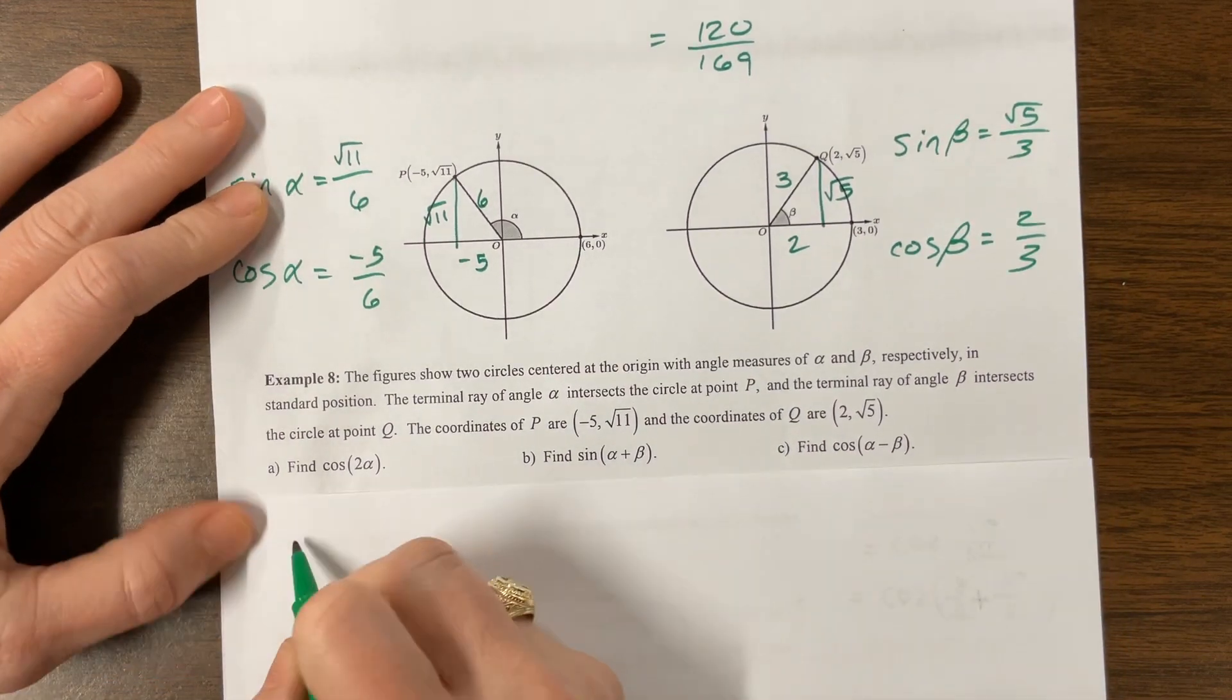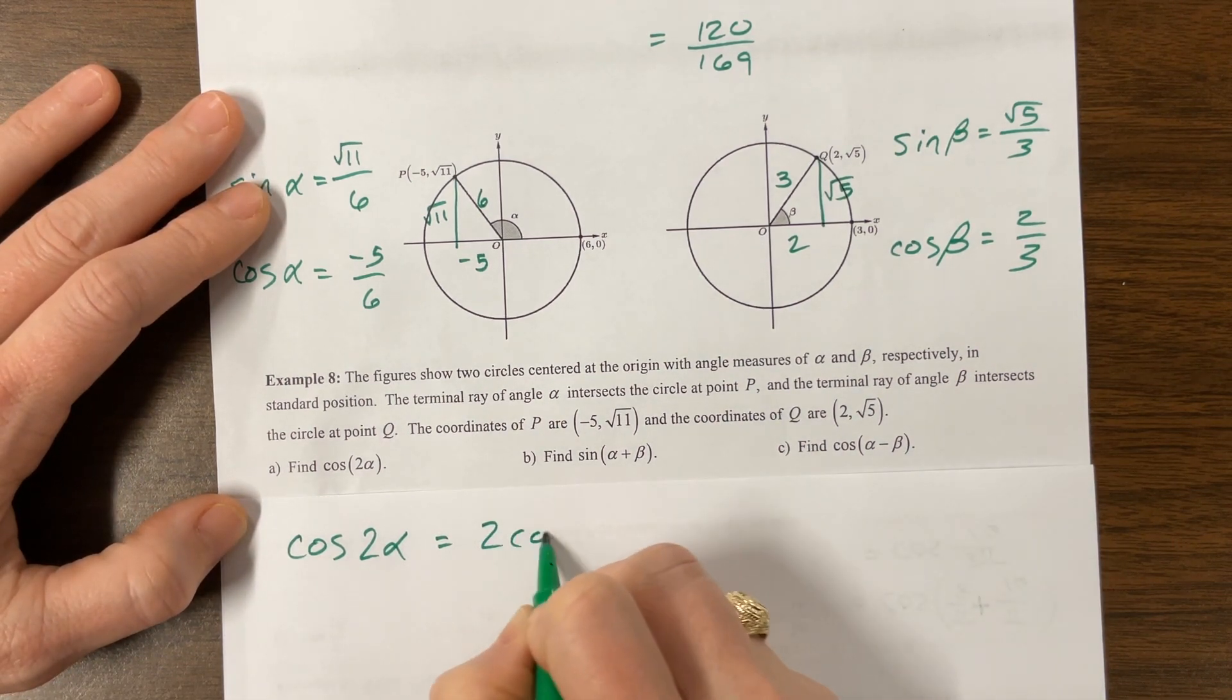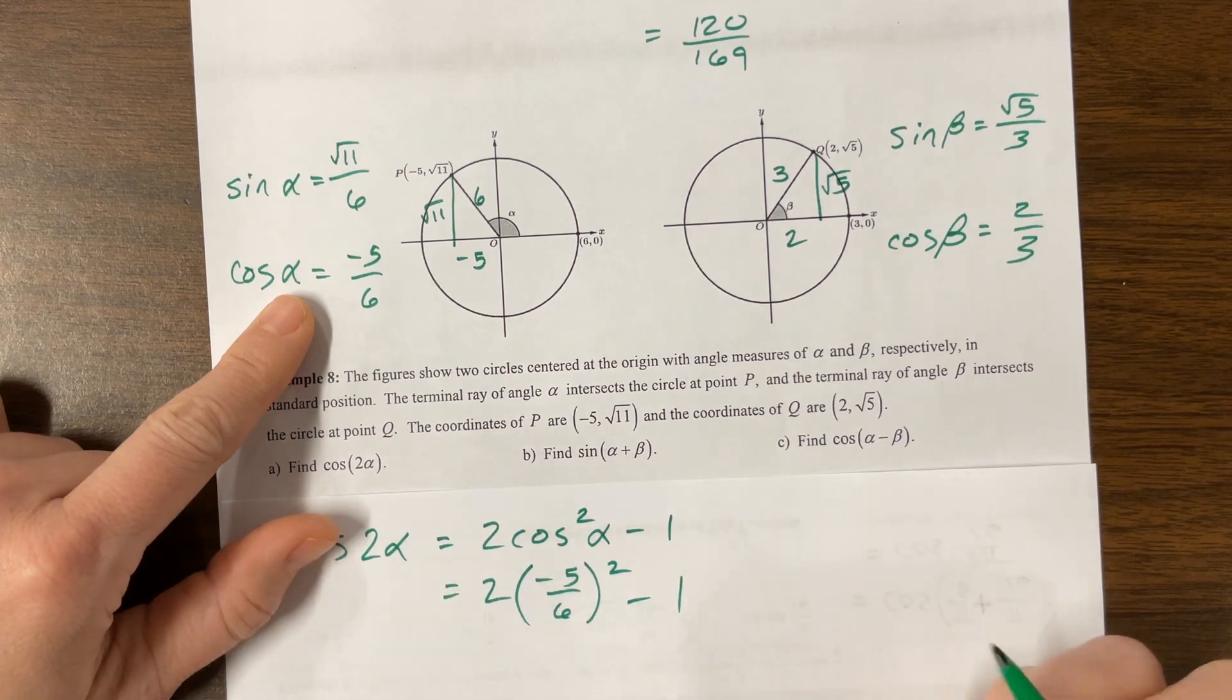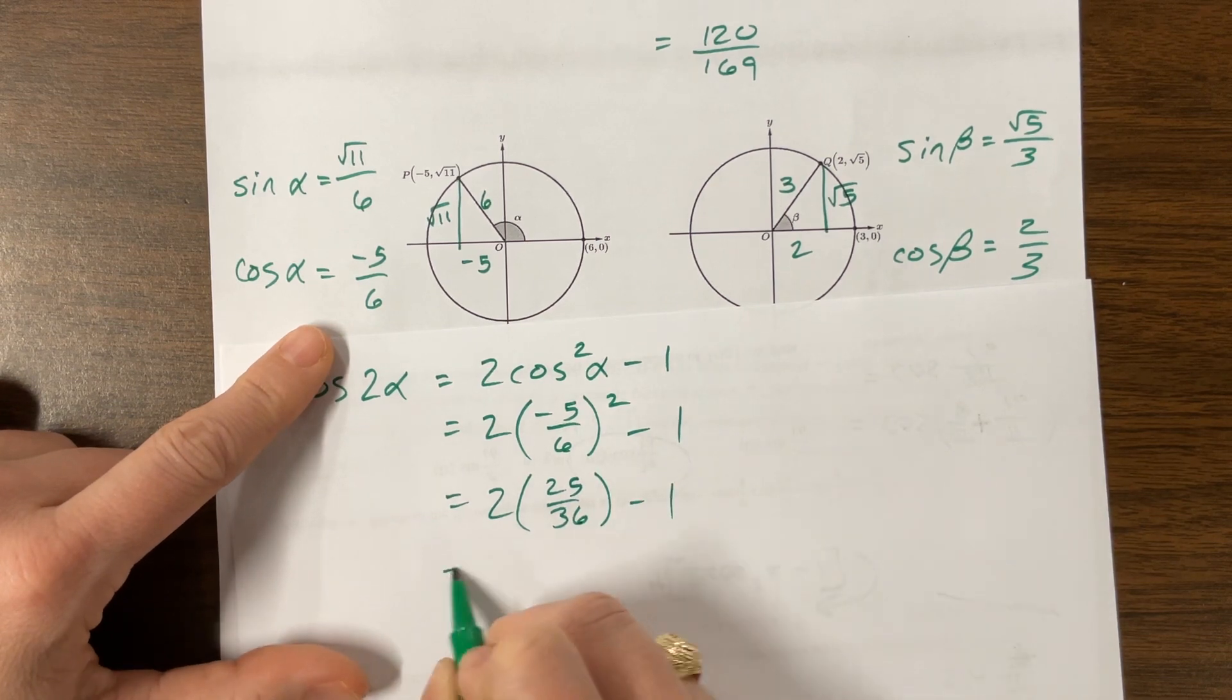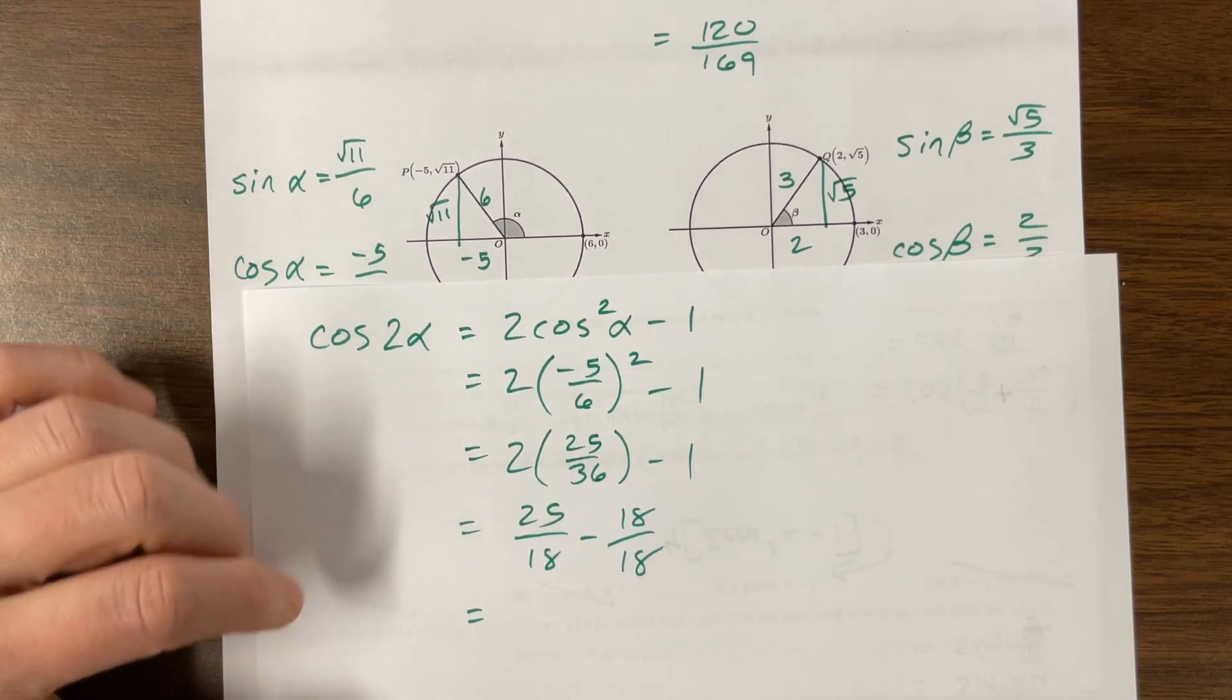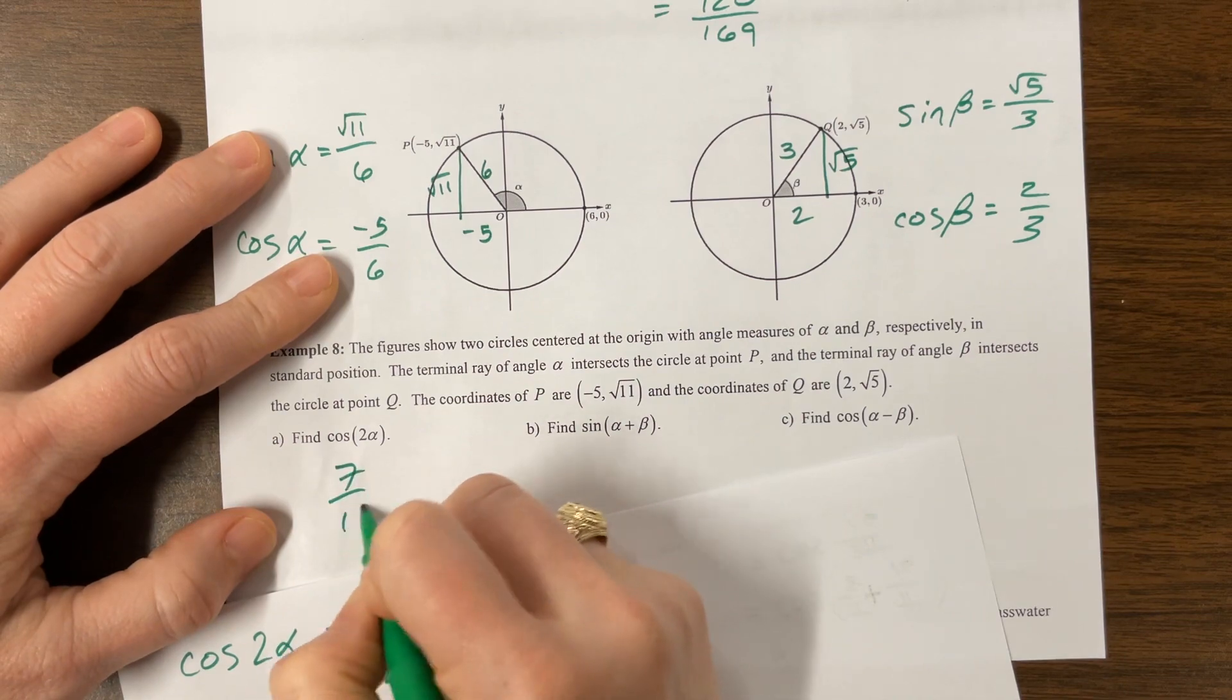Okay, so cosine of 2 alpha. What would I do? I would use one of the three versions that we have. Maybe let's do this. 2 cosine squared alpha minus 1. So, 2 cosine of alpha is negative 5 over 6. I have to square that and then subtract 1. And so this is 2 times 25 over 36 minus 1 becomes 25 over 18 minus 18 over 18. What is that? 25 minus 18. Is that 7 over 18? I can do the hard math. Sometimes I forget the easy math. And there's the first one. That's what I found.